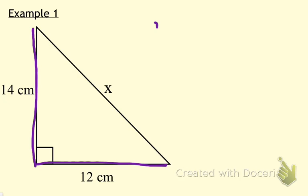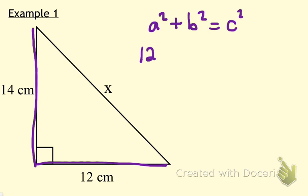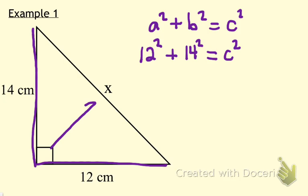I'm going to always start by writing the formula for the Pythagorean Theorem. It makes it easier when we're substituting in the values. It does not matter which of the two legs is A and which is B. I'm going to start with 12 as my A, so 12 squared plus 14 squared replacing B squared is equal to C squared. I'm going to leave C as C because C always stands for the hypotenuse — that's the side we don't know.